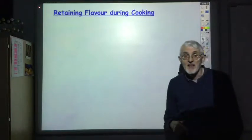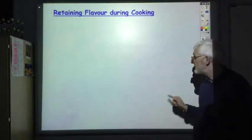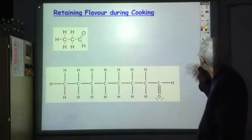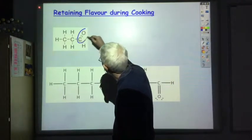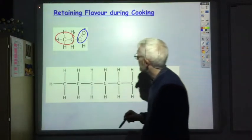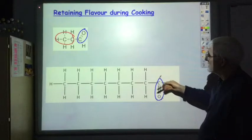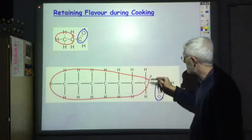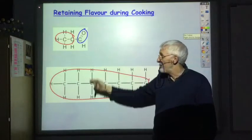But what we want to look at is how we can retain that flavor during cooking. And that depends really on the size of the aldehyde. Here we've got a small aldehyde, and here we've got a relatively large aldehyde. In the small aldehyde we've got this polar group here and this non-polar group here. Whereas if we look at the large aldehyde, the polar group is the same as in the small molecule, but the non-polar section is far larger.